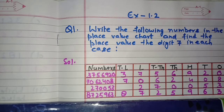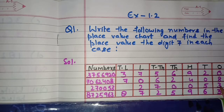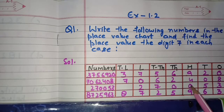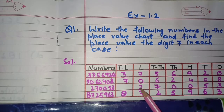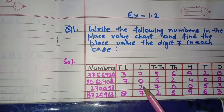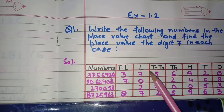The next number is 2,700,053. We write from the ones place — the last digit is 3. Placing each digit: 3, 5, 0, 0, 0, 7, 2. The number reads: two lakh, seventy thousand, fifty-three.